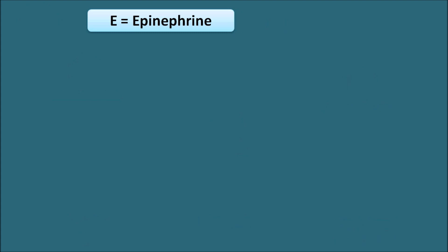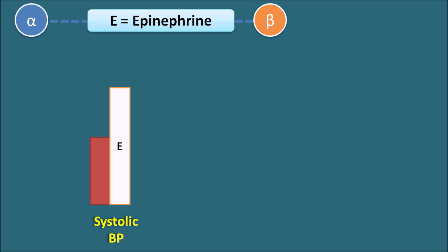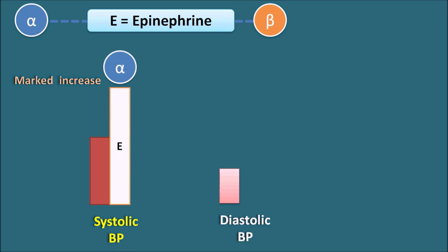Epinephrine has selectivity toward both alpha and beta receptors. Because epinephrine has alpha action, it can increase systolic blood pressure markedly, similar to norepinephrine — this marked increase in systolic blood pressure is attributed to alpha action. For diastolic blood pressure, epinephrine slightly decreases it.